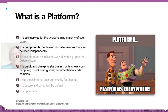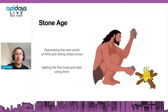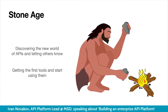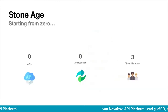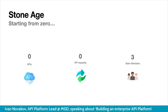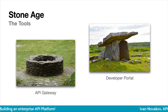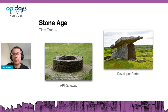Unfortunately, we came upon this article much later in the journey, but somehow we immediately knew that this is what we wanted our platform to be. Our journey starts in the Stone Age — a time when we were just discovering the world of APIs and getting the first tools and learning how to use them. We were starting from zero. There were no APIs, no traffic, and we were only three members. We had a gateway and a developer portal provided by a leading vendor in this area at that time.